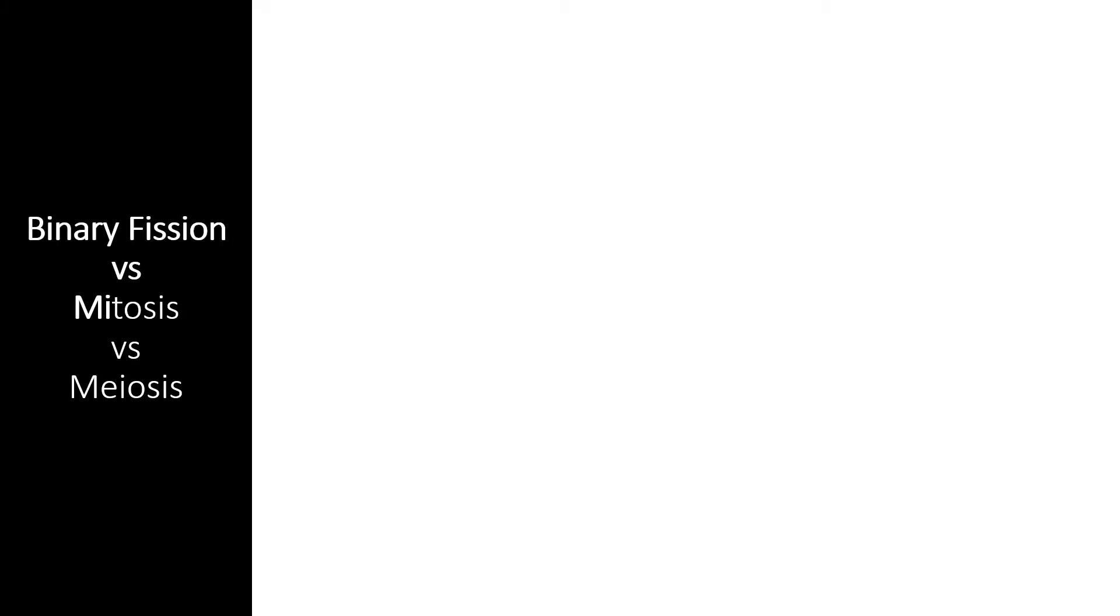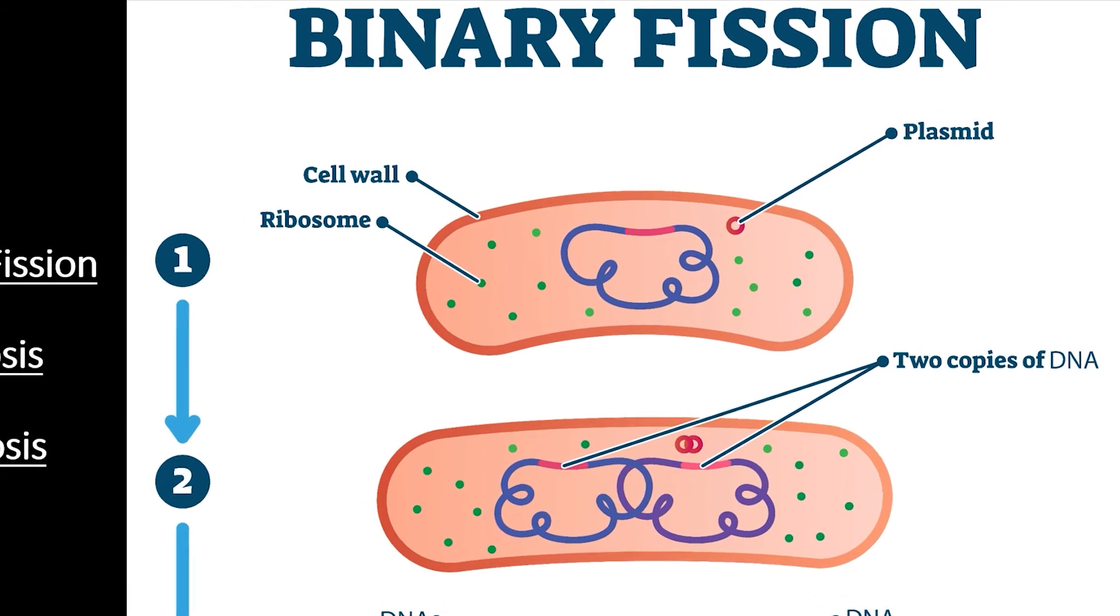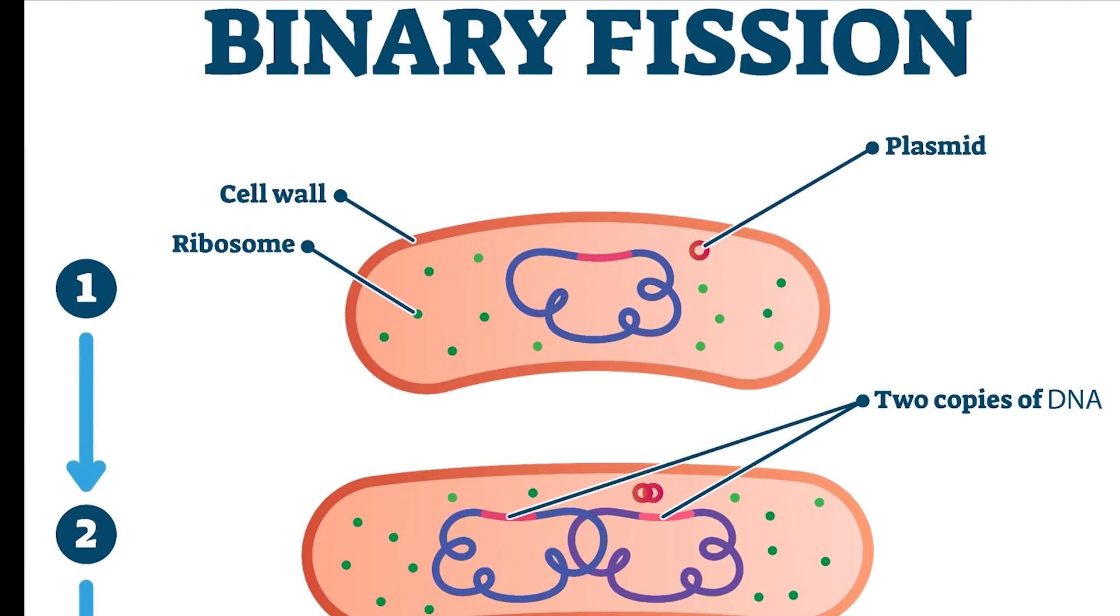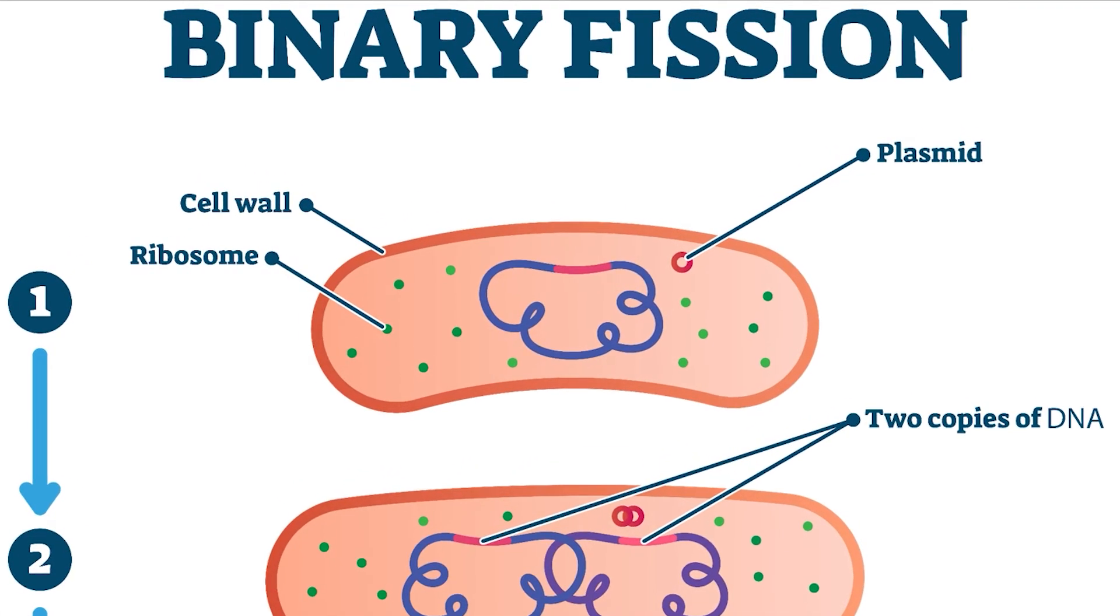There are three types of cell division, depending on the type of organism that is dividing. Binary fission is the process used by most bacteria in single-celled organisms. Since their DNA consists of a single, circular chromosome, there is no need for complex processes to sort various chromosomes into appropriate cells.